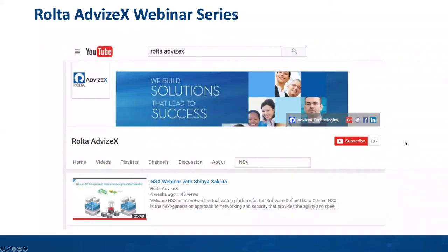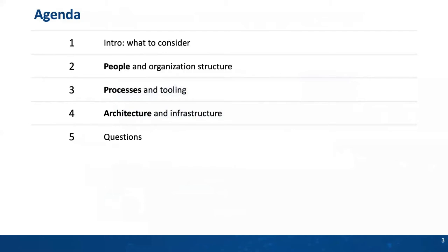So today, first off, I want to remind everybody we do have an actual webinar series. We have some other NSX webinars along with other technologies that we record and post that are probably of interest to you, so we encourage you to go check that out and subscribe. So what are we going to talk about today? Operationalizing NSX. As far as an agenda, we're breaking this down into three main parts: people, process, and architecture — talking about what that means and how to get NSX up and running and be successful, both short term and long term for you and your business.